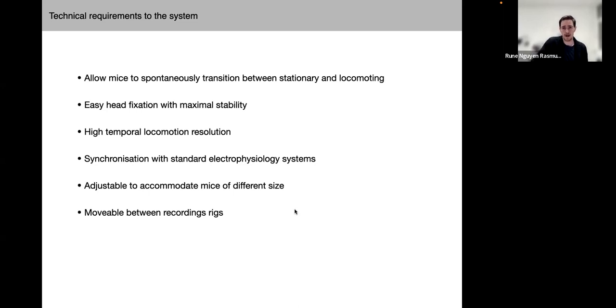In order to explore this, we needed a treadmill system for head-fixed mice, since our recording modality that allows us to track extracellular ion concentrations can currently only be done in animals that are head-fixed. The system that we needed to develop needed to fulfill a range of different requirements. Most importantly, it should allow mice to spontaneously transition between states of being stationary and locomoting. It also needed to be rather easy to head-fix the animal since we are working with awake animals, and in addition it also needed to provide a very high level of stability of the head in order for us to get good high-quality recordings.